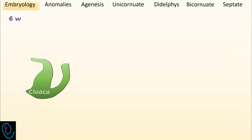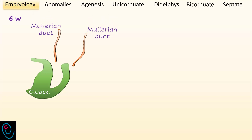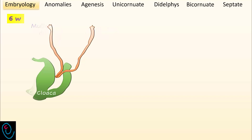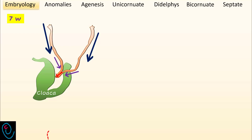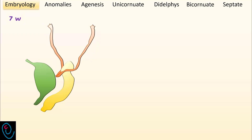In the female embryo, internal genital organs develop from two Müllerian ducts, first identified at about six weeks gestation. The Müllerian ducts elongate caudally and cross medially to meet in the midline behind the cloaca. By seven weeks gestation, the urorectal septum develops and separates the cloaca into two parts. The posterior part forms the rectum, while the anterior part forms the urogenital sinus.